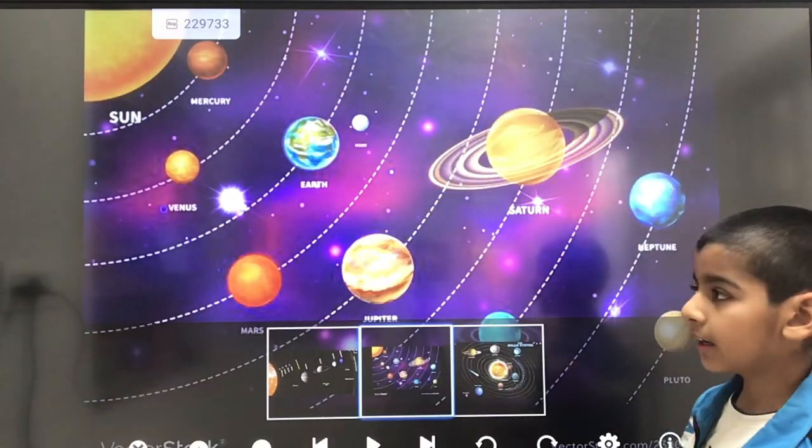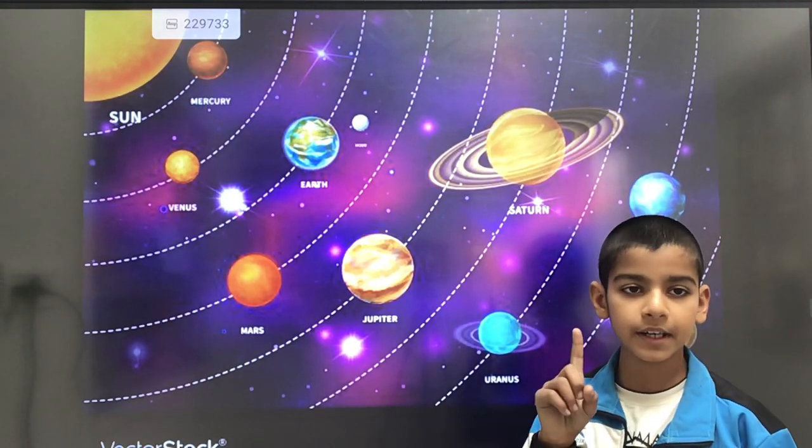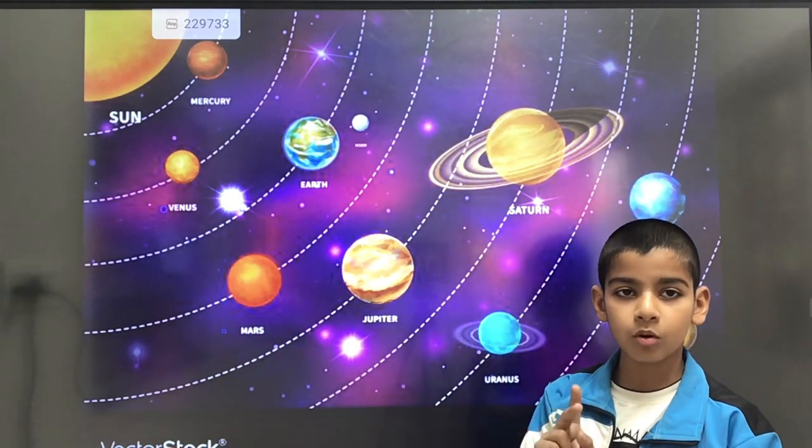Now we will talk about planets. We have divided planets into two parts: Terrestrial Planets, also called Inner Planets, and Jovian Planets, also called Gaseous Planets or Outer Planets.